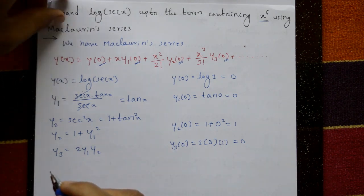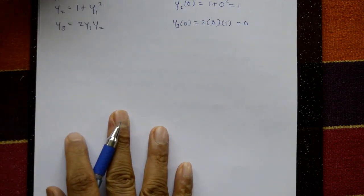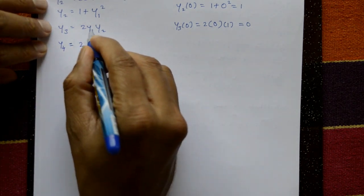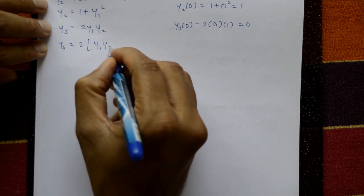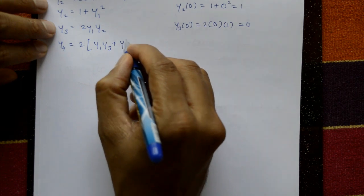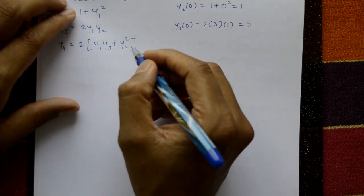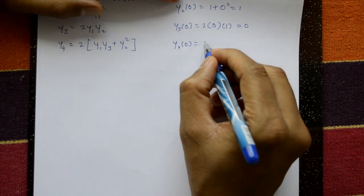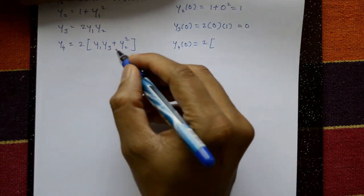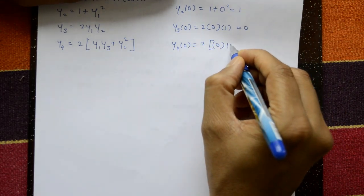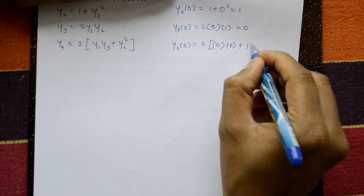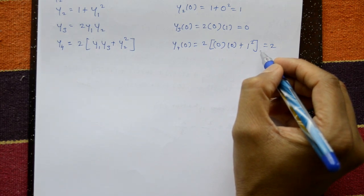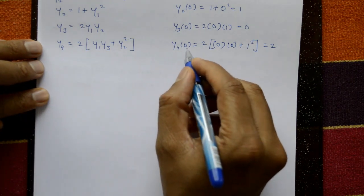For y4, differentiating y3 = 2·y1·y2 using the product rule: y4 = 2·[y1·y3 + y2·y2] = 2·[y1·y3 + y2²]. Put x = 0: 2·[0 × 0 + 1²] = 2 × 1 = 2. So y4(0) = 2.